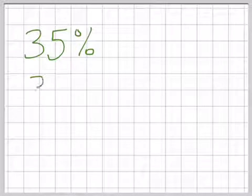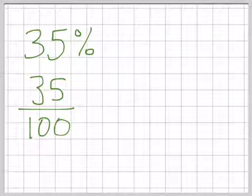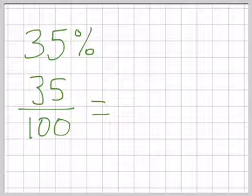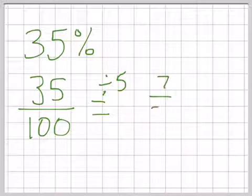35%. 35 is our numerator, 100 is our denominator because percent means out of 100, and then if we divide by 5 this time we will get 7 20ths.